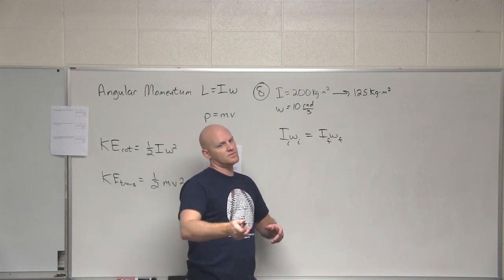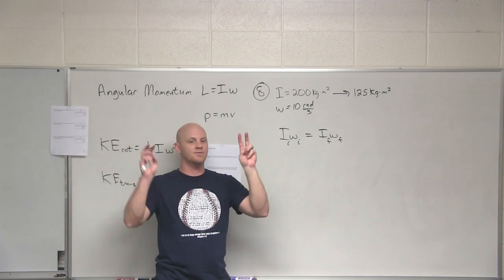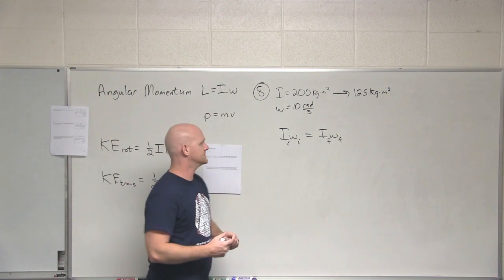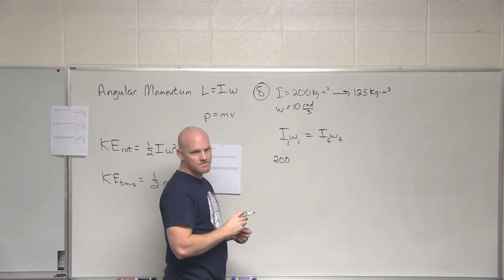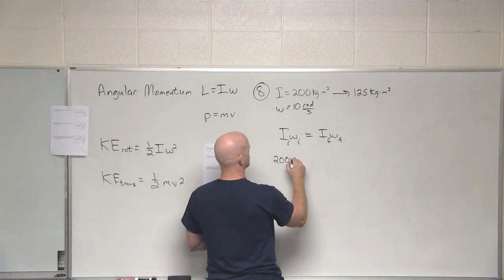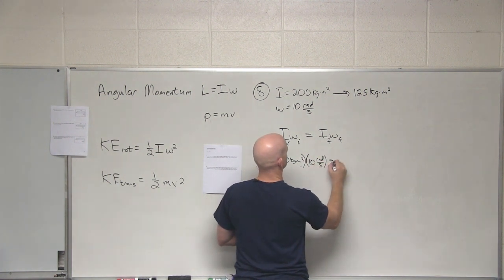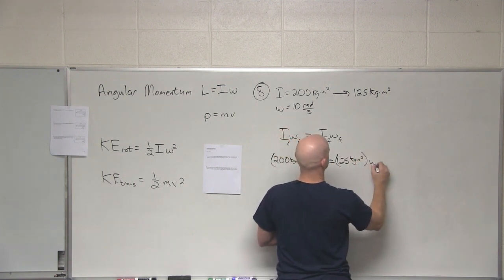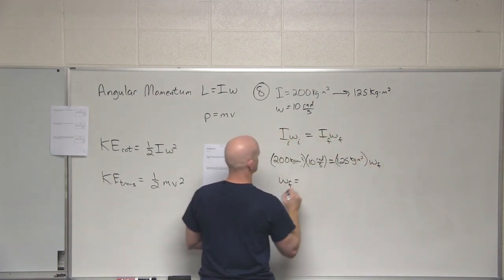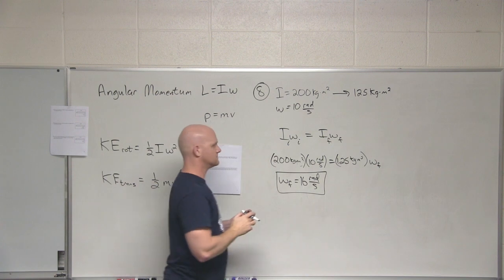We know three out of four, will solve for that final angular velocity. So why is it conserved? Same way when we dealt with collisions. Do you remember conservation of momentum? Now it's just rotational momentum, but same thing. Good. 16 radians per second.